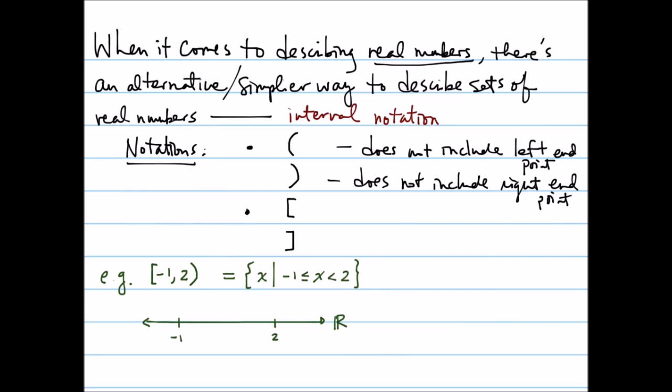And notice that because the left end point is actually included in our set, we're going to use a kind of a closed bracket notation, or you can actually use a solid dot on the real number line to indicate that. You can then use an open circle on 2 or a right open bracket to indicate that. And it's everything in between. So we're going to either make this portion of the line really thick or you can use the shading technique.